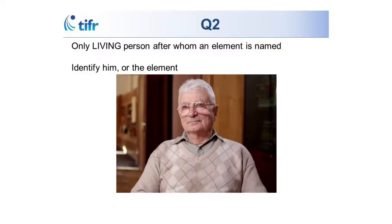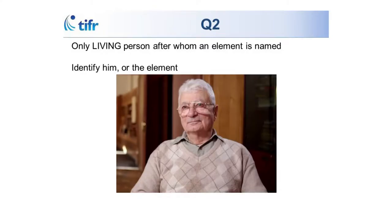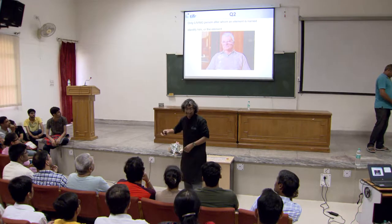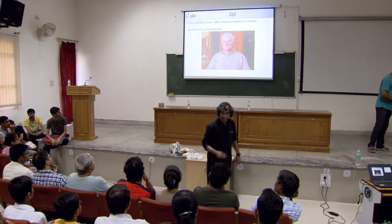Who is this person? He is the only living person after whom an element is named. The only living person after whom an element is named. This is Yuri Oganessian, after whom Oganesson — the last in the noble gases row — is named. Element 118.